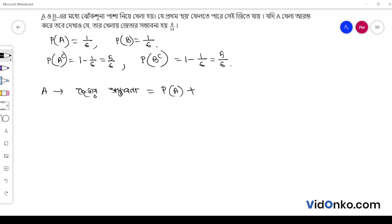The probability of A is 1 over 6 plus the probability, and so on. The calculation continues with these values.